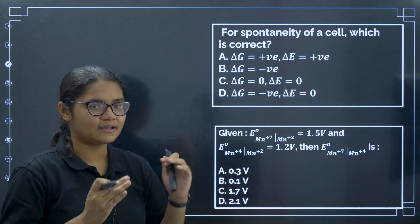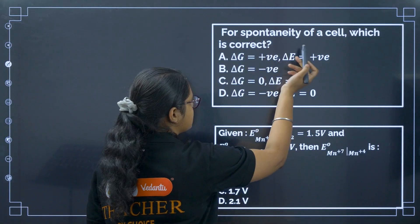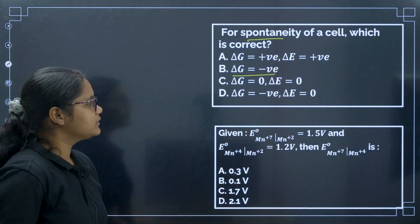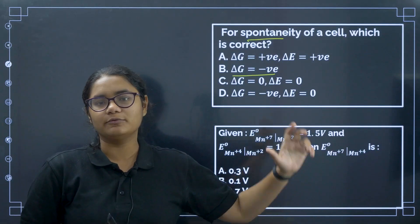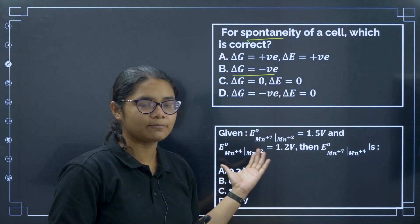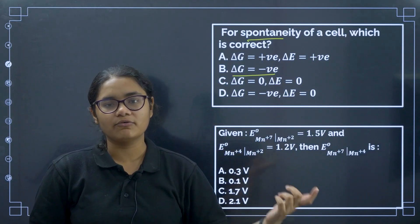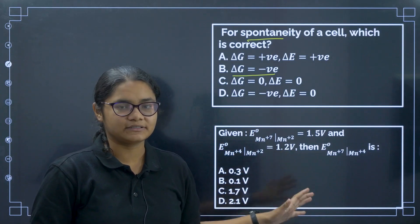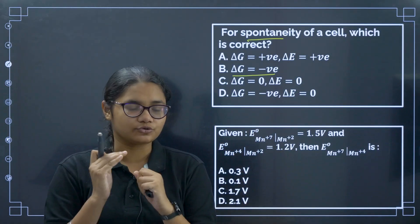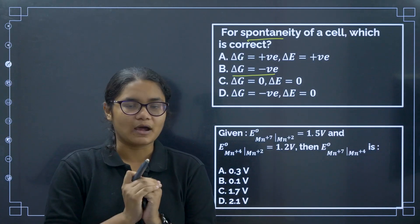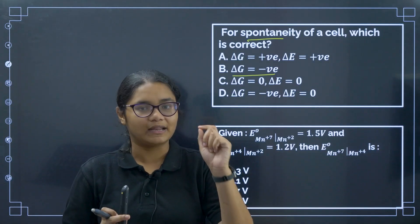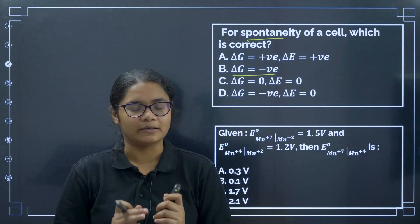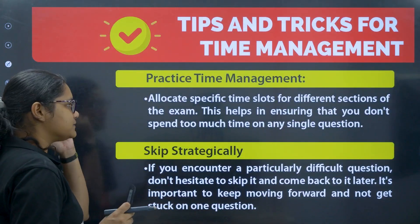For example, here are two questions from electrochemistry. The question 'What is the spontaneity of a cell?' — the answer is delta G has to be negative, so this won't take a full minute. Whatever time you save on easy questions should be invested in questions requiring more calculation. Correct analysis and judgment of questions will help you save a lot of time.